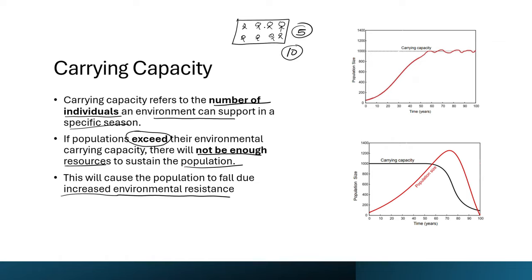When there are no longer enough resources, animals that cannot eat will die, so the population will fall and fluctuate. This is why carrying capacity is a cause of population fluctuation — the population decreases because there are now more species than the environment can support. The environment can only support a maximum number of species depending on the resources present.